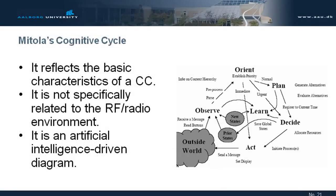And that's what is his cognitive cycle. As you can see, if you look carefully, there's basically nothing related specifically to the radio. That's more an artificial intelligence diagram. Because he was a software guy — he was not caring too much about the specific detail of the radio channel. He was caring about the user experience from a software point of view. This is essentially an artificial intelligence state diagram.